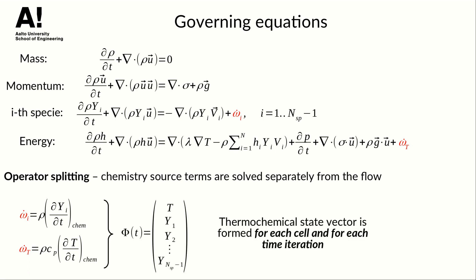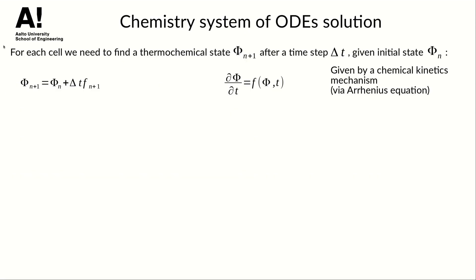Thus, in every cell of a discretized domain we have an independent problem with its state described by a thermochemical state vector phi comprising mass fractions of species and temperature. What we want to find here is the thermochemical state vector for a cell after a time step delta t. And how do we do it?